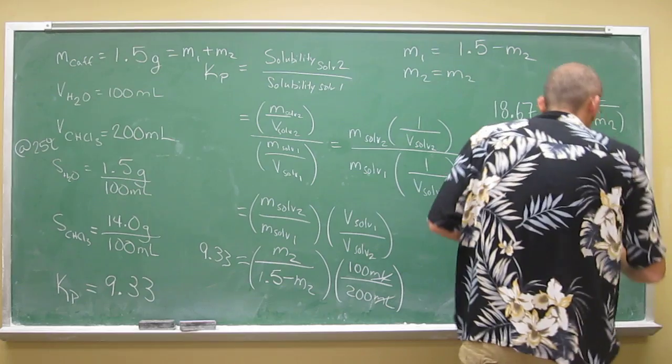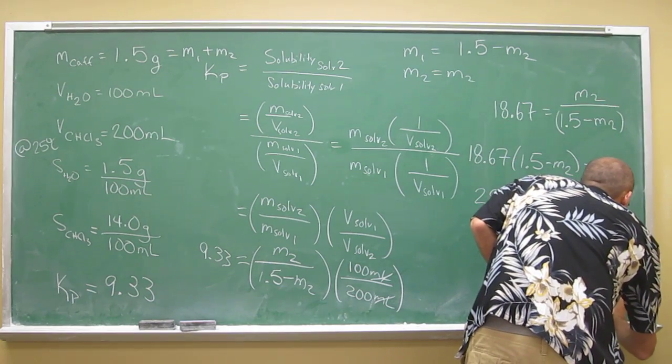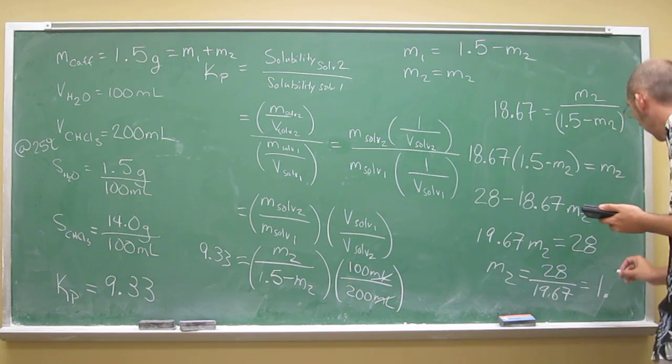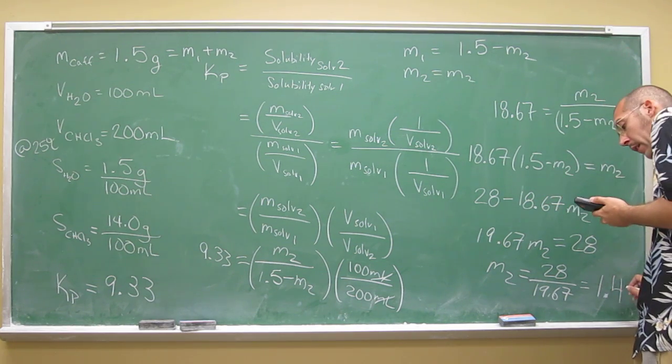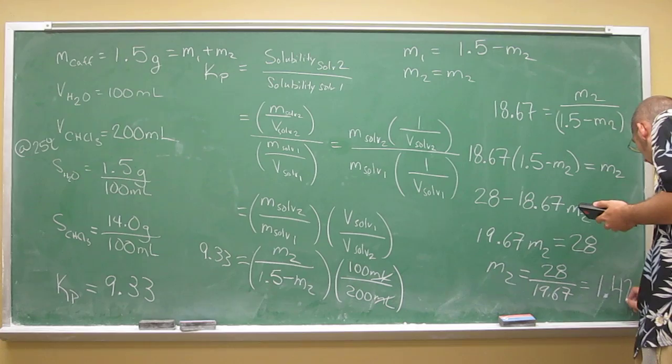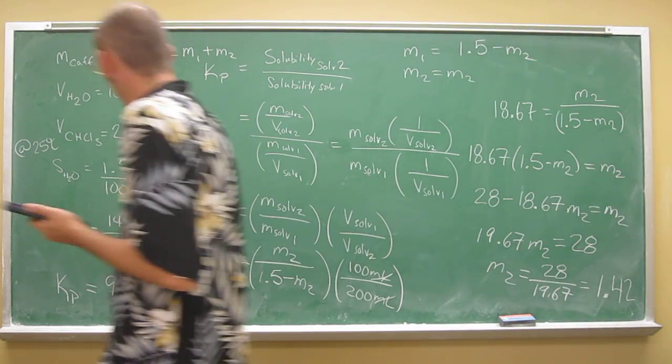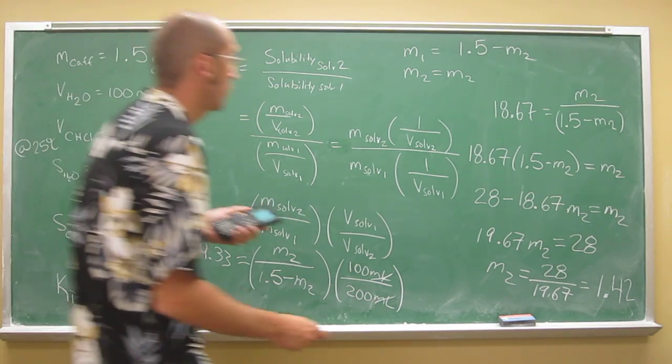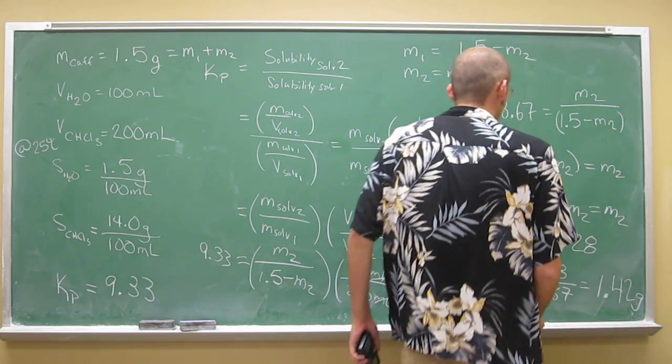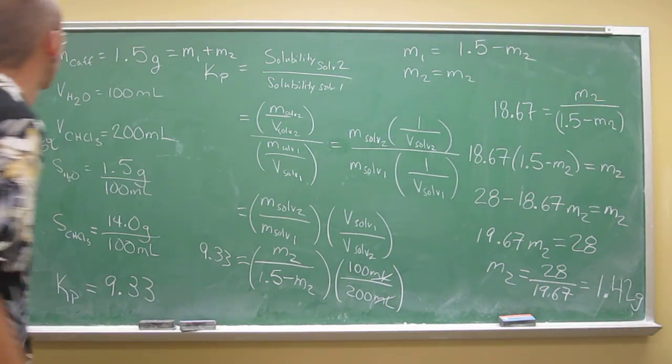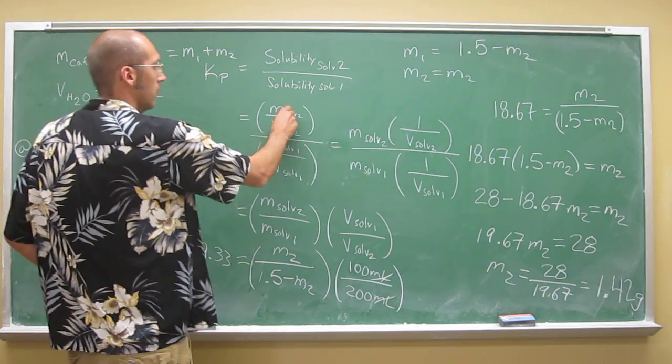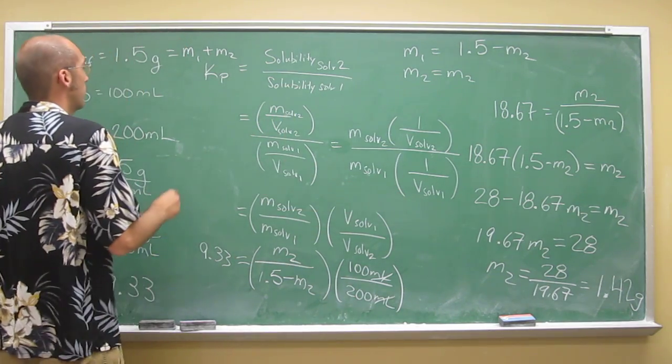So I got 1 point, let's see, we'll do this as 1.42. So we know 1.42 grams is M2. That is the mass in solvent 2, is 1.42 grams.